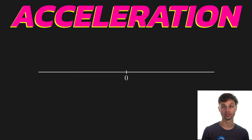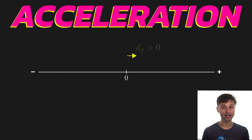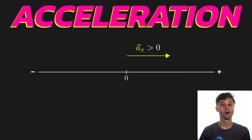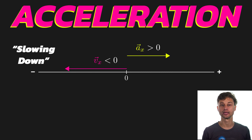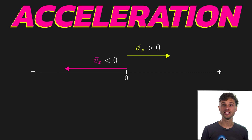Notice that acceleration can be negative or positive. It's important that when we set up our coordinates, we define what is the positive direction and what is the negative direction — in any coordinate system: 1D, 2D, or 3D. In this case we'll say that to the right is positive and to the left is negative. If my acceleration is positive and my velocity is also to the right (positive), the object is speeding up. But if acceleration is positive and velocity is to the left (negative), I am actually decelerating — slowing down — because velocity and acceleration oppose each other.